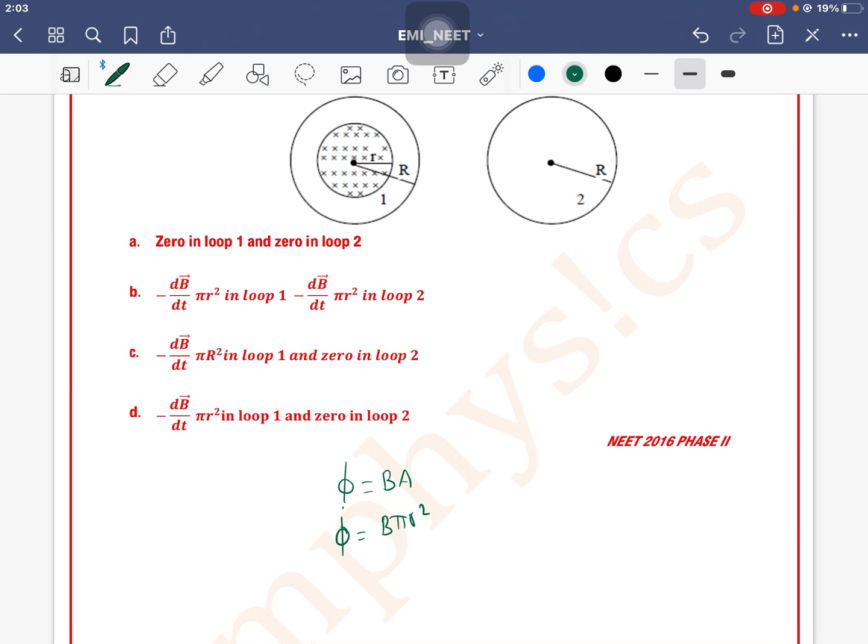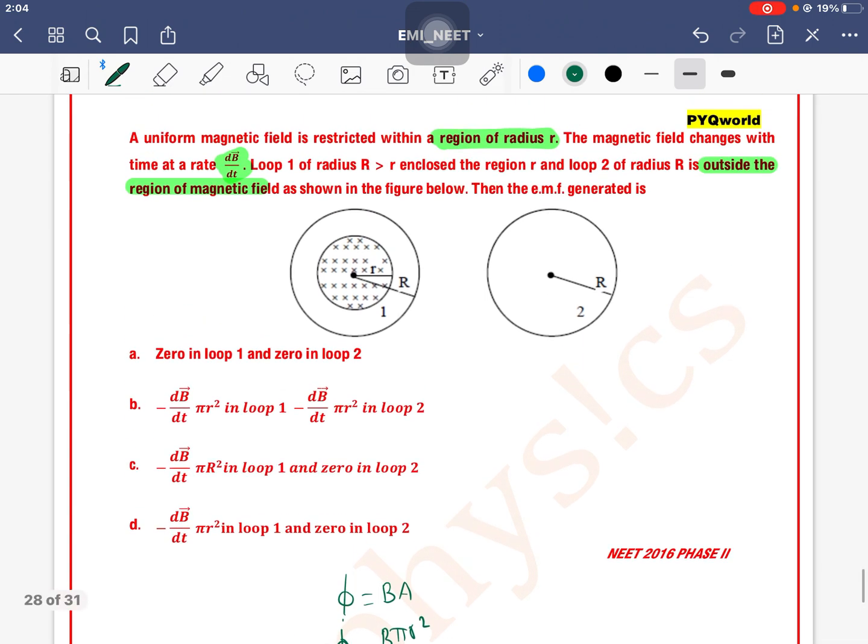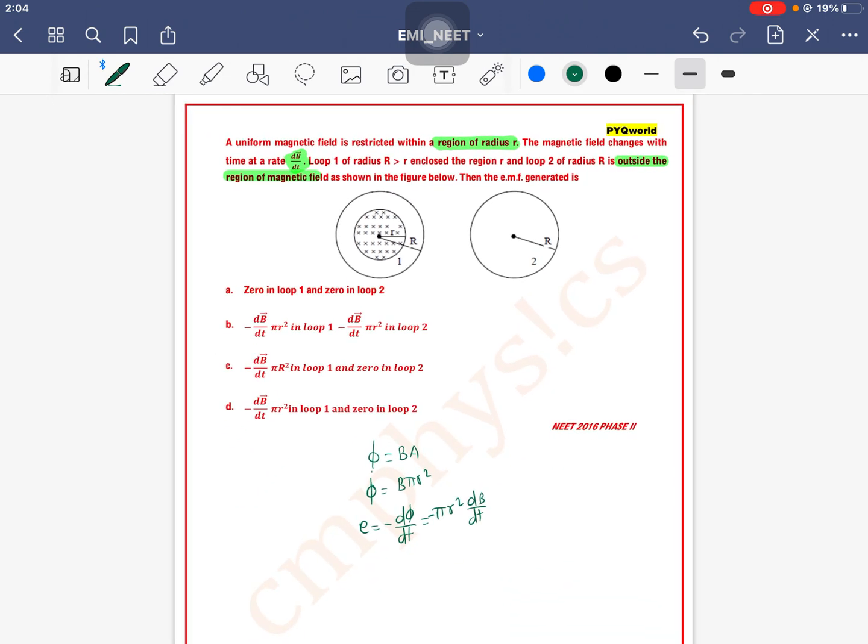So the EMF we get is minus dΦ/dt which equals, look, π is constant, r is constant, so this becomes dB/dt. So here, for the first loop, the EMF will be minus π r² dB/dt.